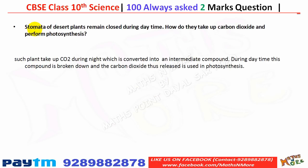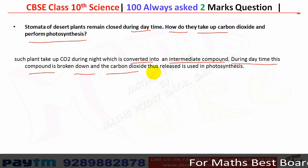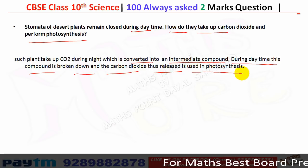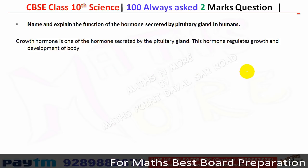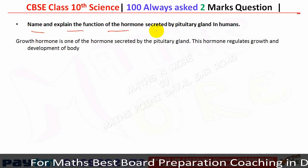Stomata of desert plants remain closed during the daytime. These plants take up carbon dioxide during the night, which is converted into an intermediate compound. During the daytime this compound is broken down and the carbon dioxide released is used in photosynthesis.